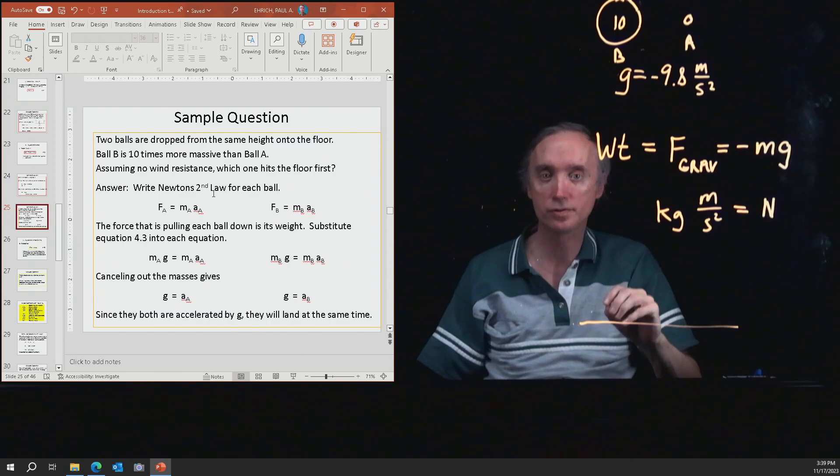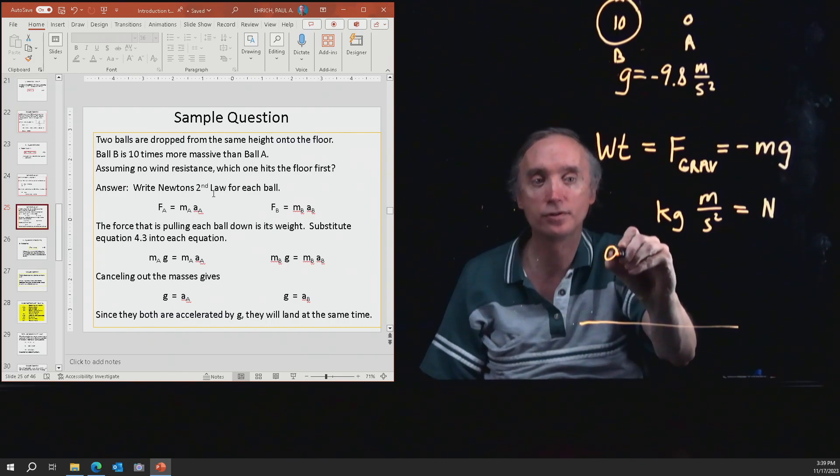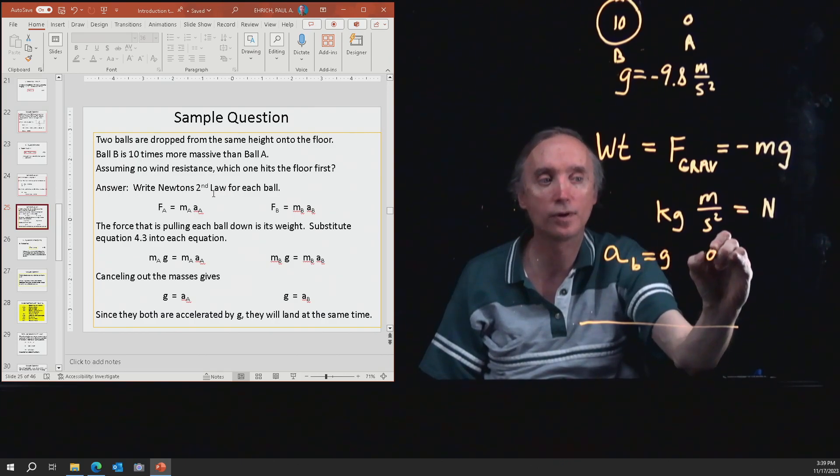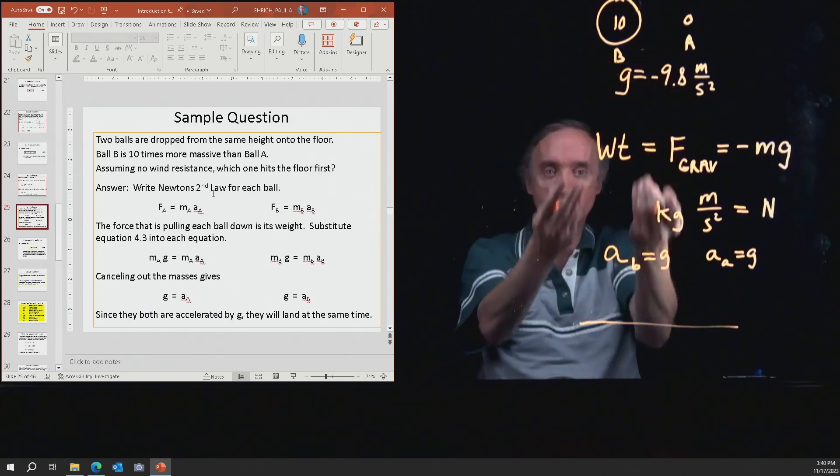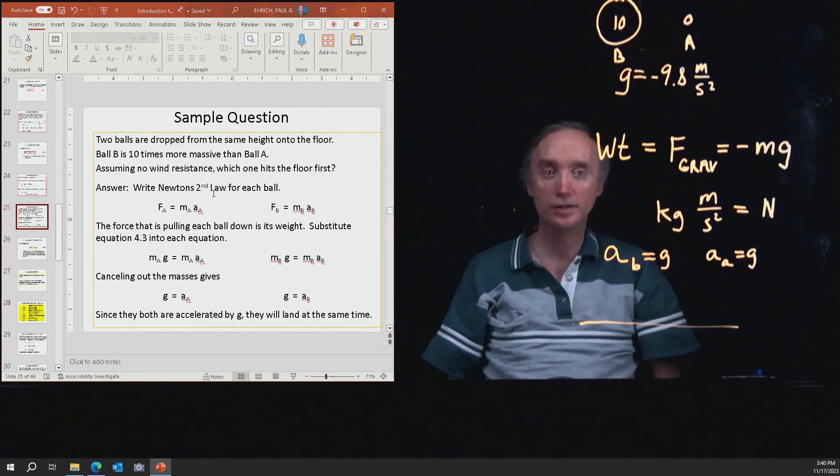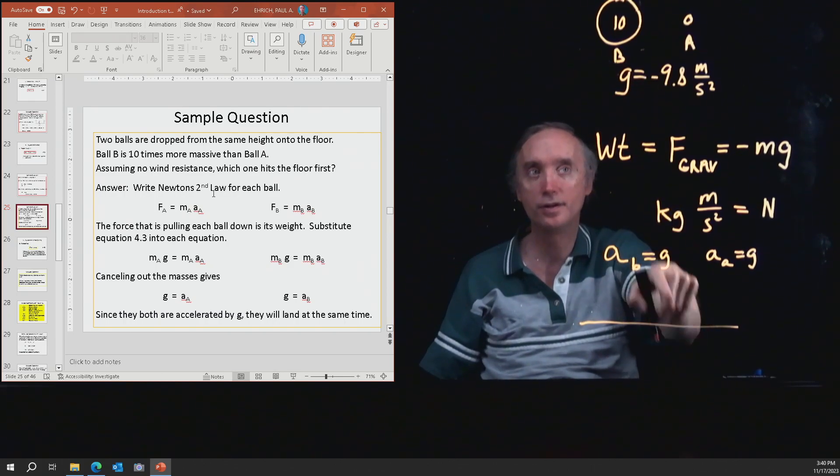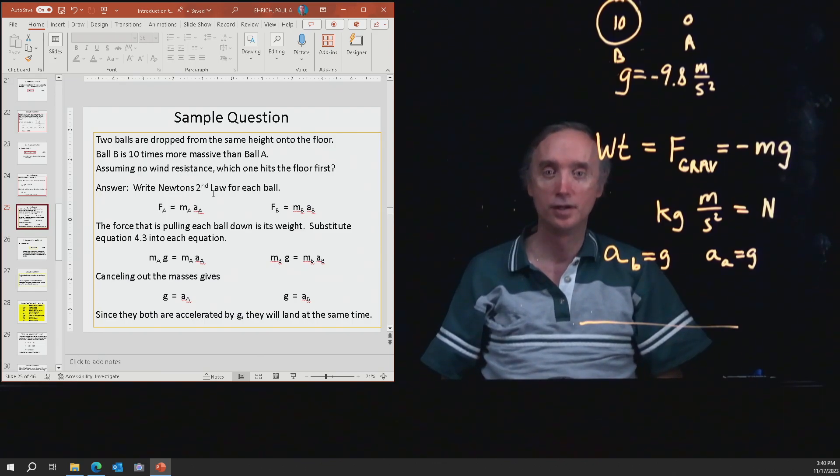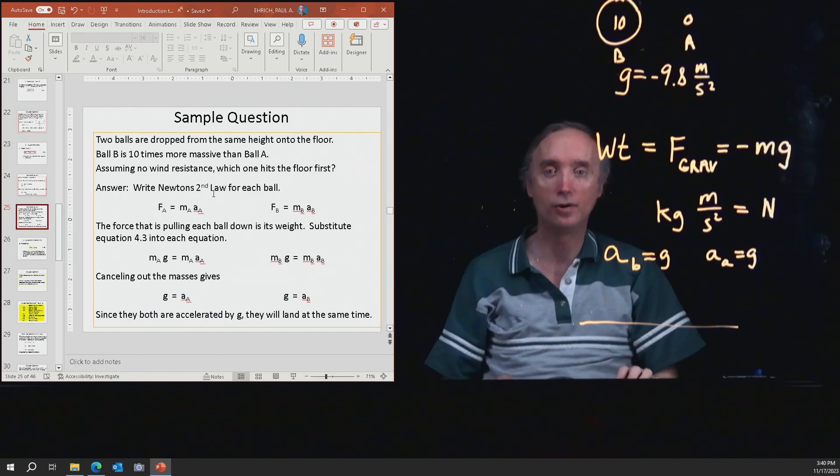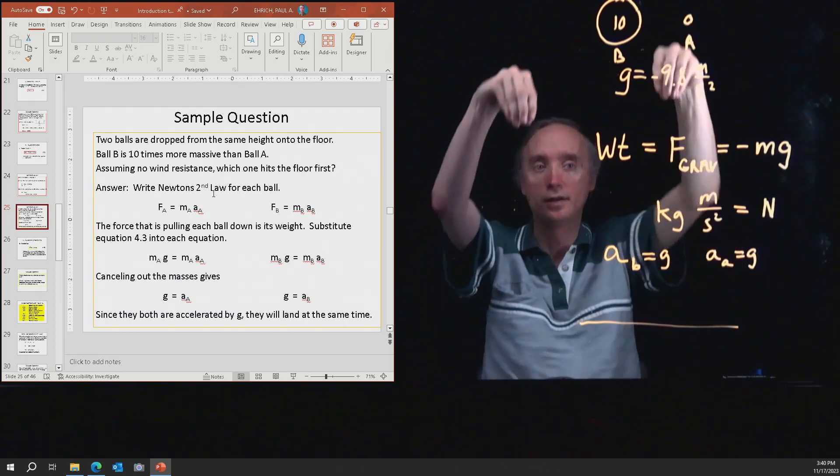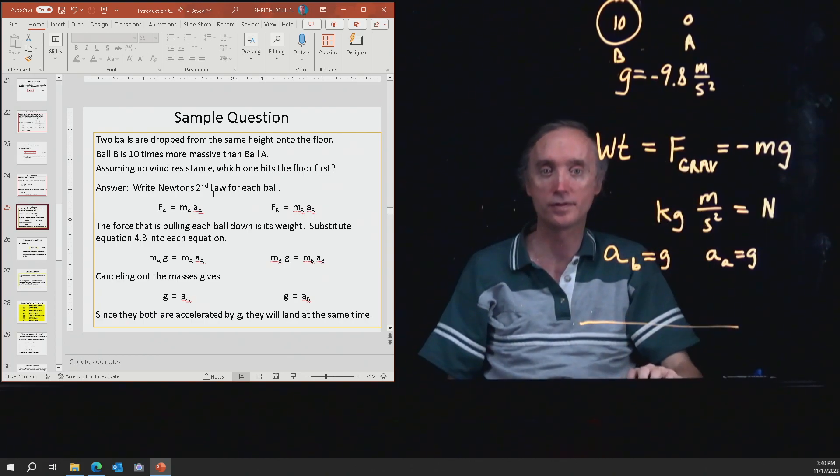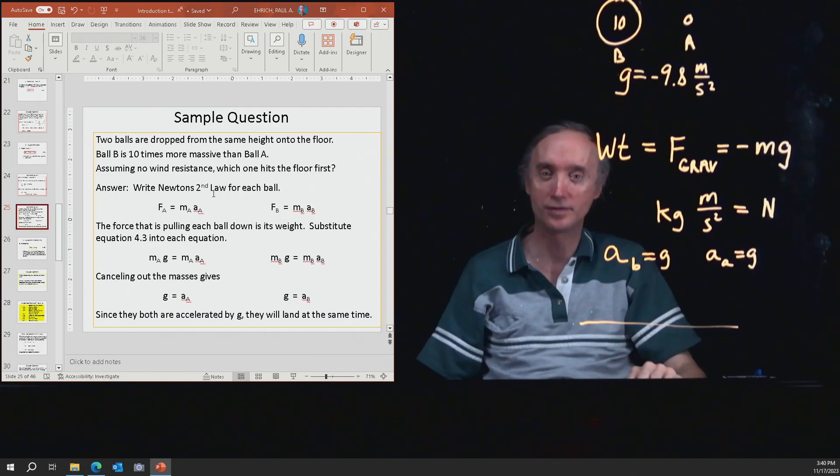But notice the m is on both sides. So you can cancel out the m's. And then what do you find out? That the acceleration of B is going to be equal to G, and the acceleration of A is also going to be equal to G. So if they're both being accelerated by the same amount, then that means they're going to have the same speed when they hit the floor, and it's going to take the same amount of time for both of them to hit the floor. Like I said, this was a big deal. So they think that Galileo went to the top of the leaning tower of Pisa and took a cannonball and took a little ball and dropped them just to show the people that they will both hit the ground at the same time.